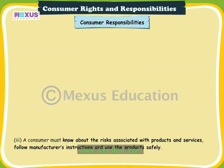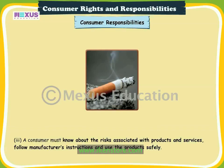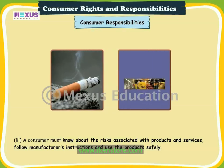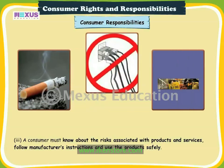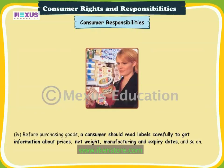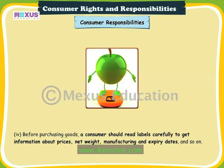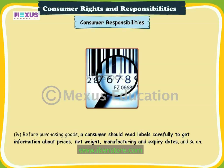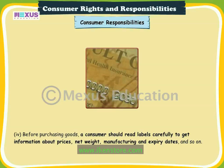Three: a consumer must know about the risks associated with products and services, follow the manufacturer's instructions, and use the products safely. Four: before purchasing goods, a consumer should read labels carefully to get information about prices, net weight, manufacturing and expiry dates, and so on.